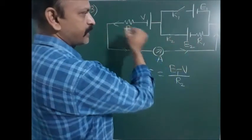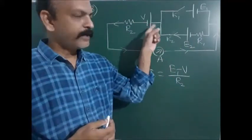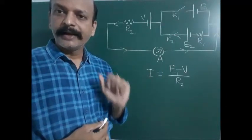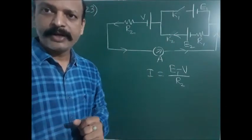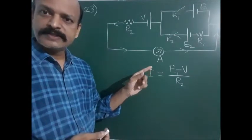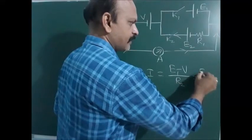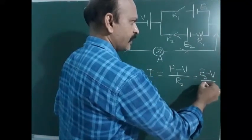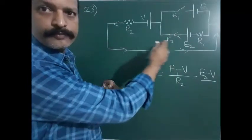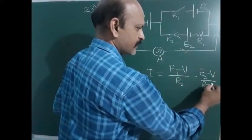Next, if k1 is open and k2 is closed, current is passed by the e2 cell. The V cell is opposite to the e2 cell. The net current passing is e2 minus V, and now r1 and r2 are both in series, so current = (e2 - V) / (r1 + r2).